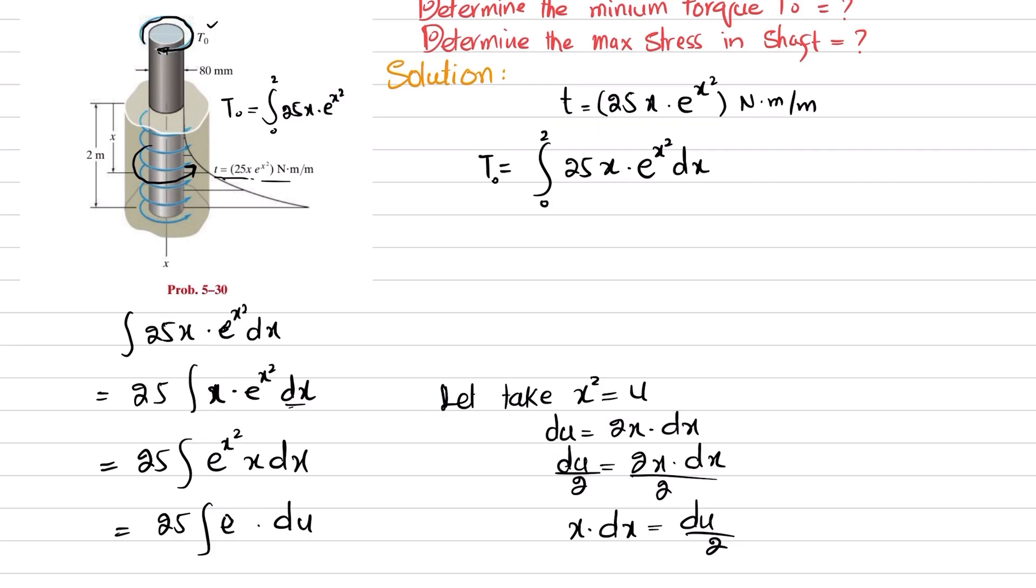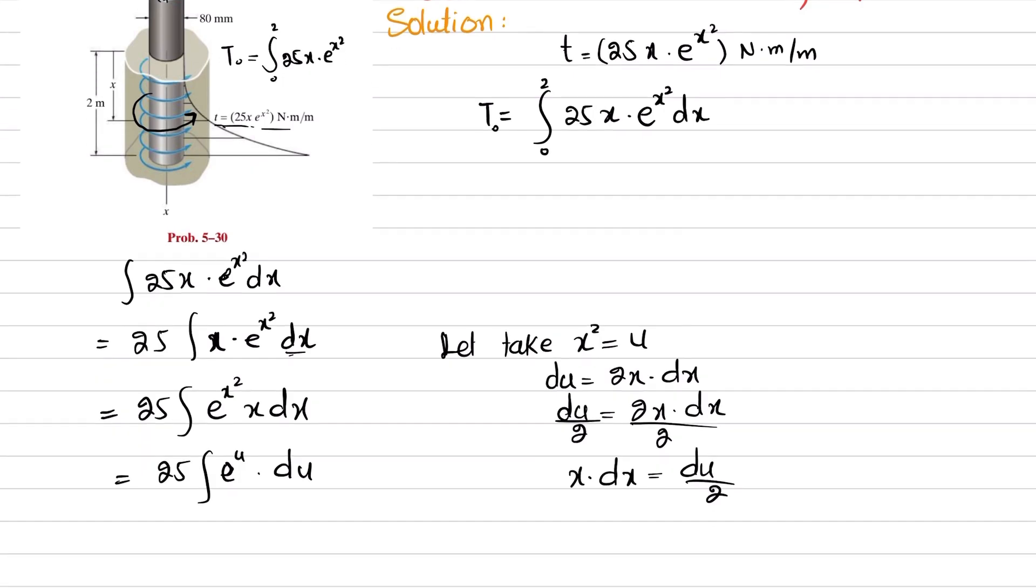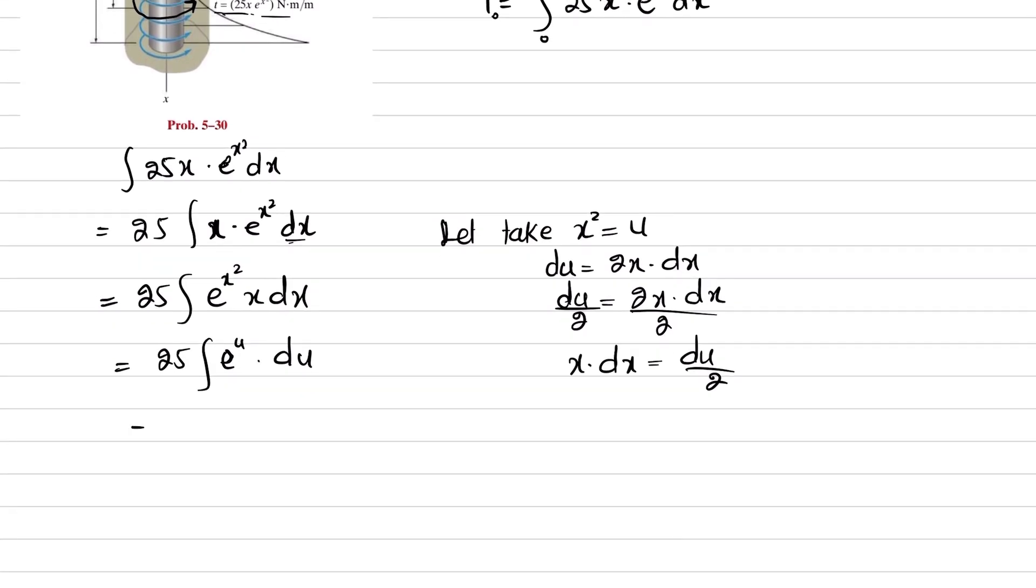Now you can take 25 times integral of e^u du, which will be equal to e^u. It will be equal to 25e^u, where u is x².